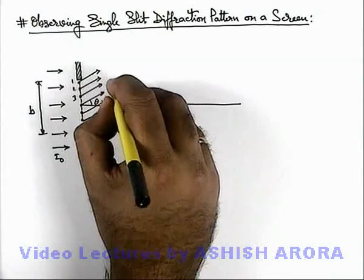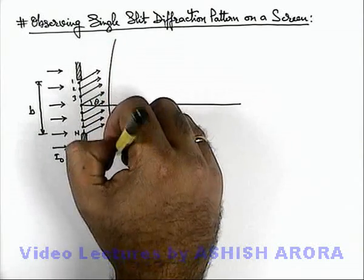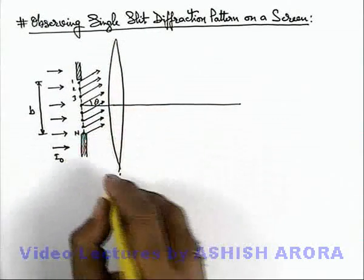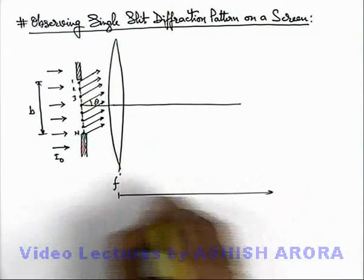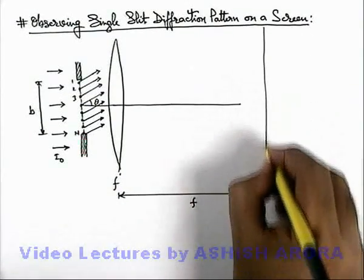Now if we place a lens over here, this is a convex lens having focal length f, and exactly at a distance f from the lens we place a screen.